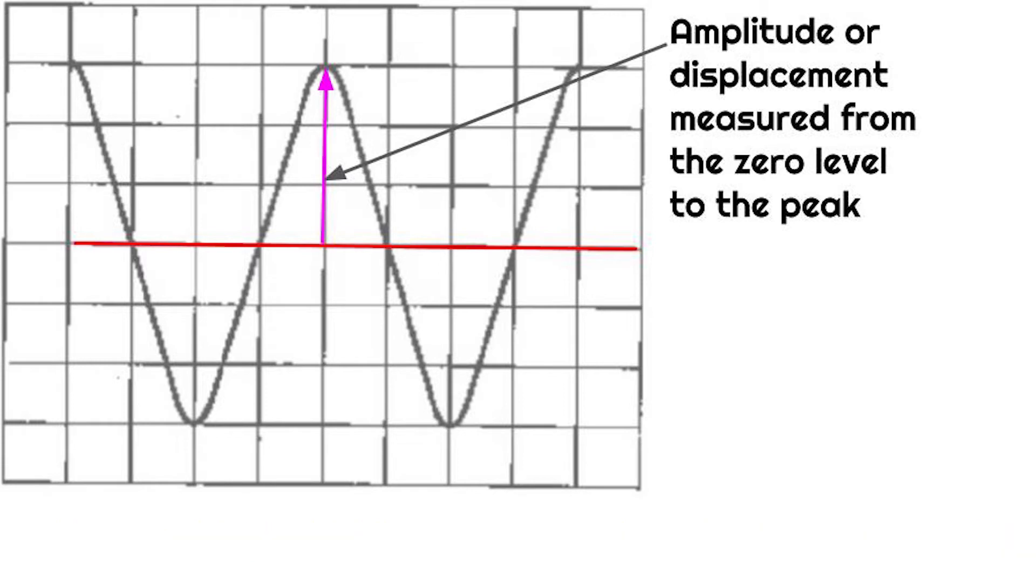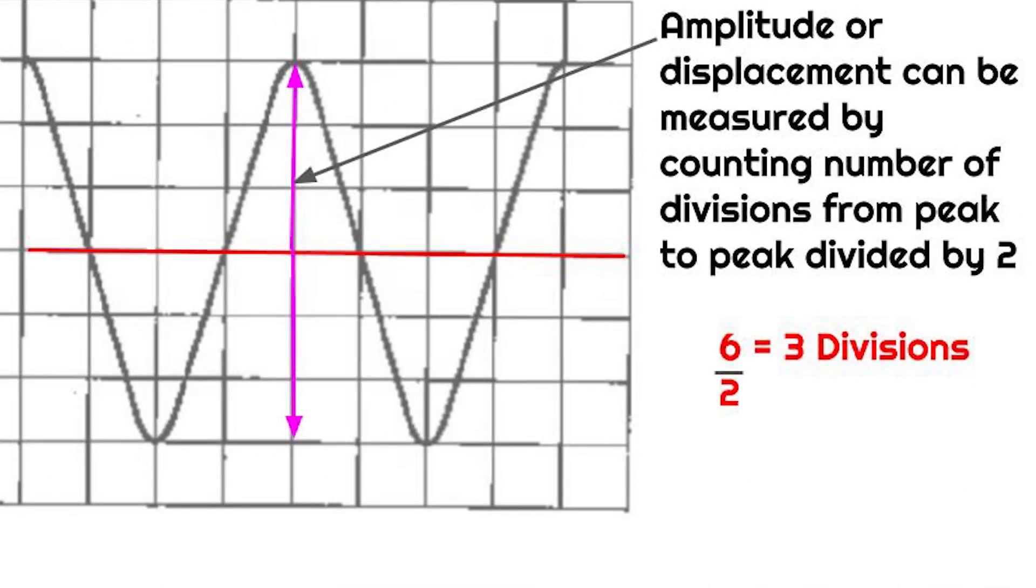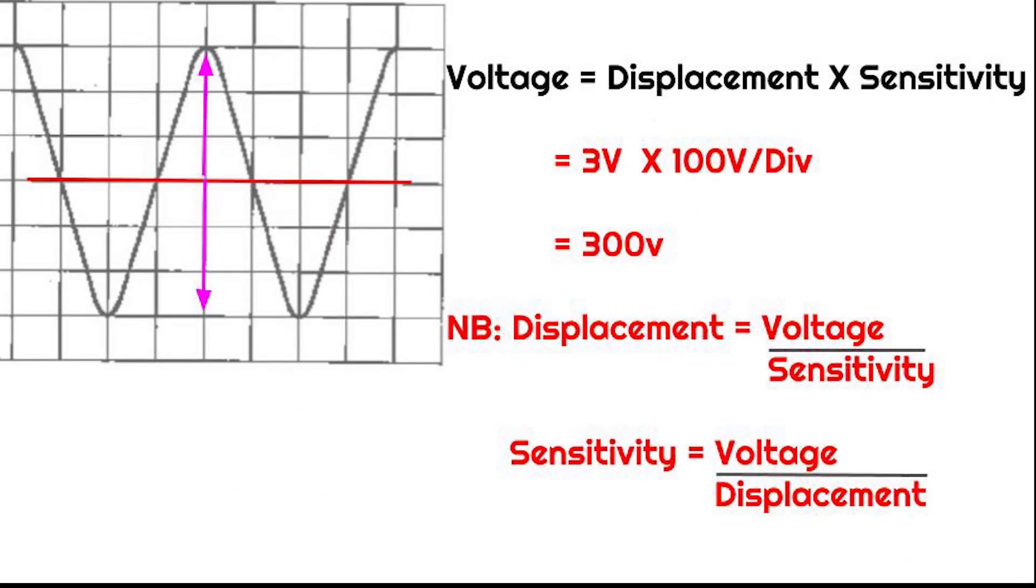On the diagram shown on the screen, our displacement is obtained by counting the number of divisions from the zero level to the peak or simply count the number of divisions from peak to peak then divide by two. The sensitivity of the Y gain is given as 100 volts per division. Voltage will be displacement which is 3 times the sensitivity of the Y gain which is 100 volts per division. That is 300 volts.